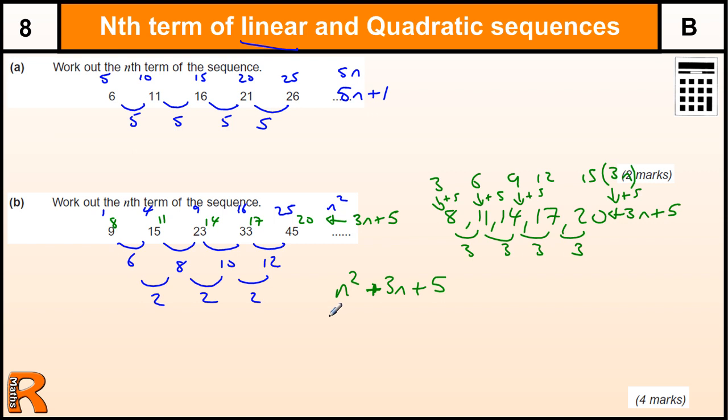Okay, there's four marks there. You get one for realizing the second difference is 2. One for getting this sequence, 8, 11, 14, 17, 20. One for getting n squared plus 3n, and the final mark for getting a plus 5 on the end.